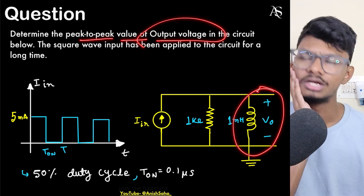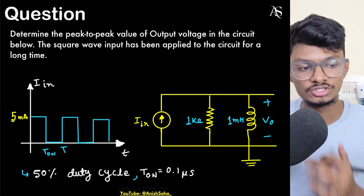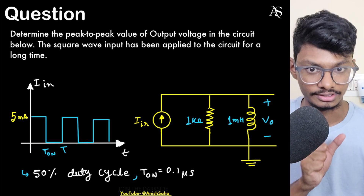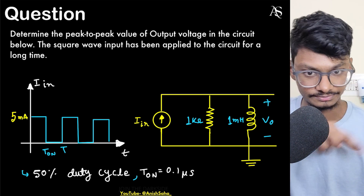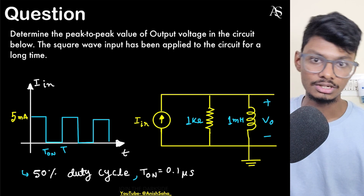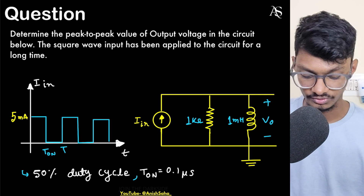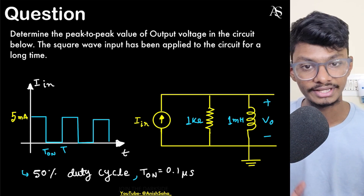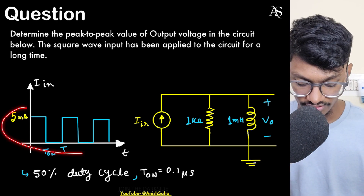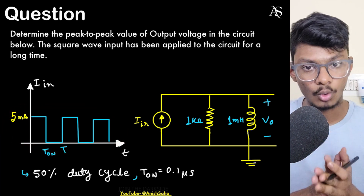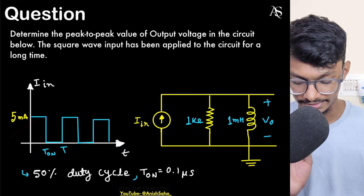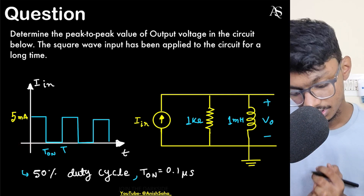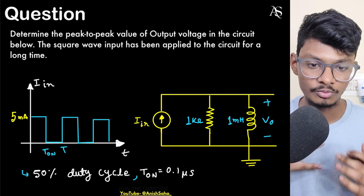If you remember from choppers, we used to find the peak-to-peak value of the inductor output voltage because currents were going in a triangular fashion. Here, we are giving a square current waveform as input with a 50% duty cycle. So how do we proceed with this question?